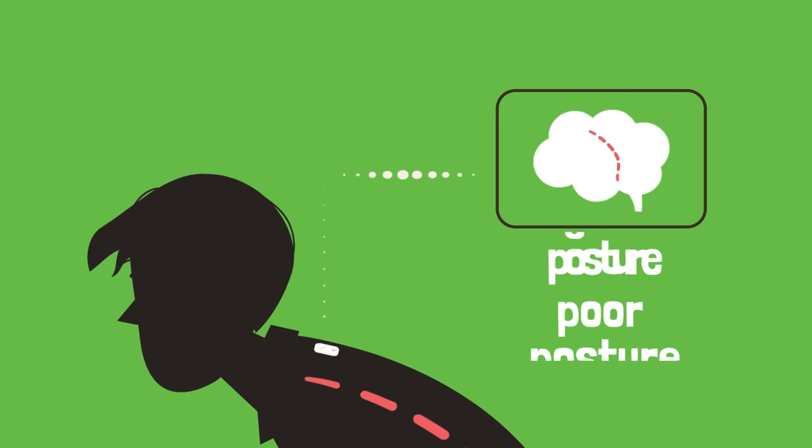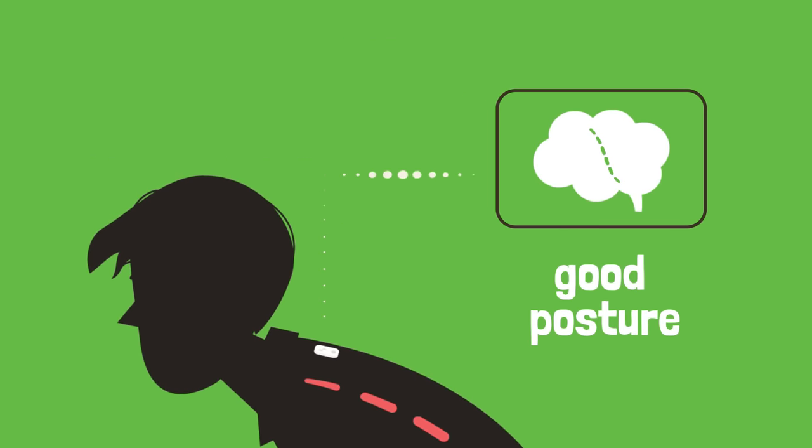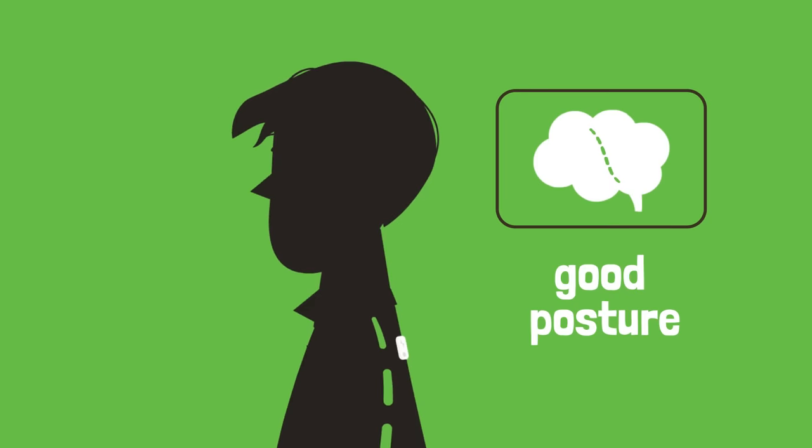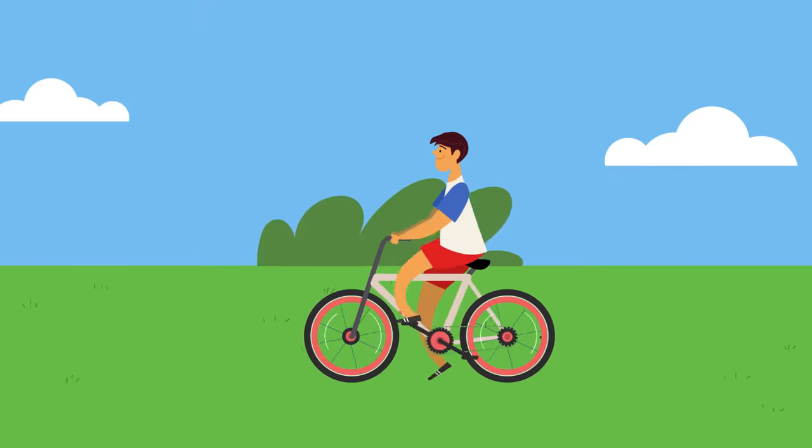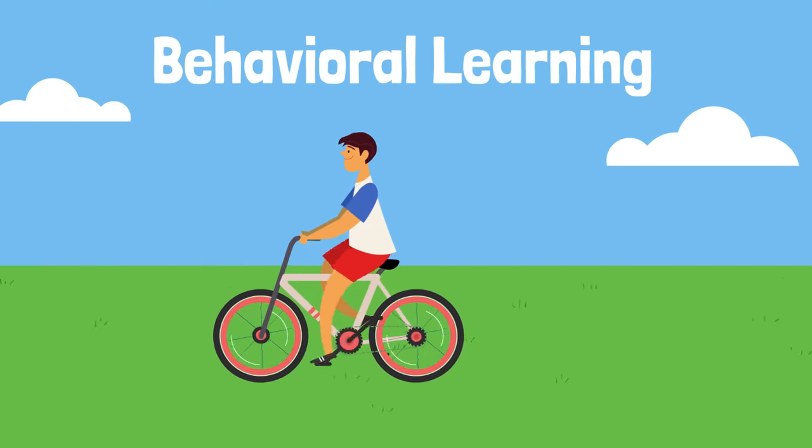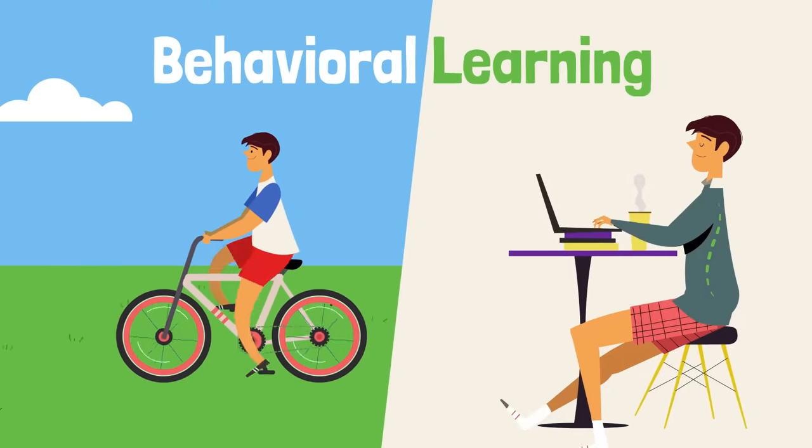Once the vibration is recognized as a signal for better posture, the brain creates an association between the vibration and good posture. This is how behavioral learning works, whether you are being active or not.